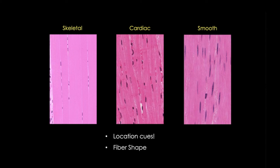Second, you want to be paying attention to fiber shape and size. Skeletal muscle fibers are huge and smooth muscle fibers are small. And finally, you want to be paying attention to nuclei — both location and number.